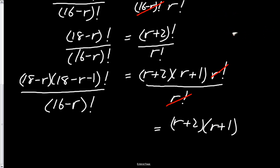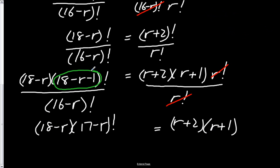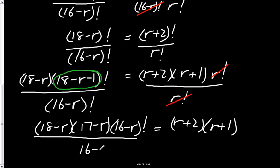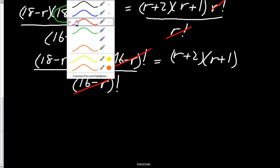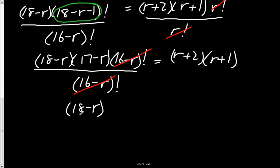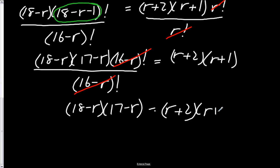What I'm going to do now is show you that this side becomes (18 minus R) times (17 minus R) factorial. I got that by subtracting 1 from the 18. Now, instead of writing it as (17 minus R) factorial, I'll write it as (18 minus R) times (17 minus R) times (16 minus R) factorial, and of course this is still divided by (16 minus R) factorial. So these divide out, and scrolling down a little further, what we're left with is: (18 minus R) times (17 minus R) equals (R plus 2) times (R plus 1).